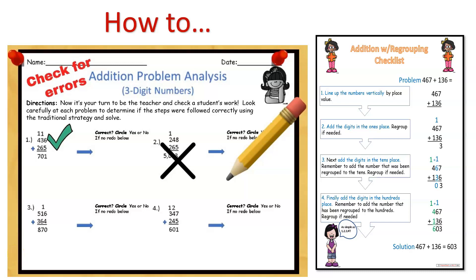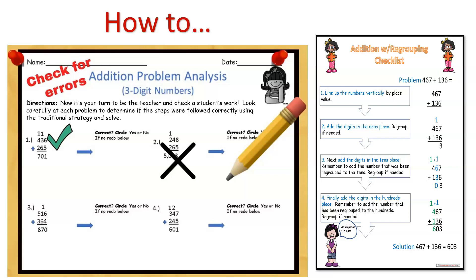This activity works best when students have a checklist to refer to, which serves as a model for how students should accurately solve the problem. With checklists in hand, students will then be ready to carefully examine each sample problem to determine if it was solved correctly. And with each correction, students will be reminded of what not to do, which will only reinforce their understanding of how to solve the problem.